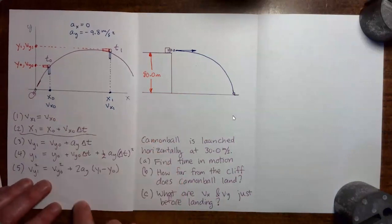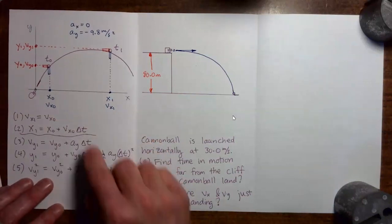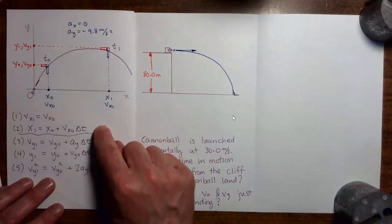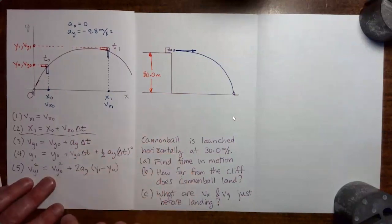So these are the equations here. In the x direction, we have the equations of constant velocity motion, and in the y direction, we have the equations of constant acceleration motion.